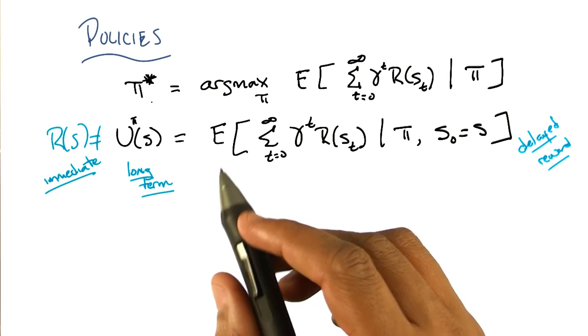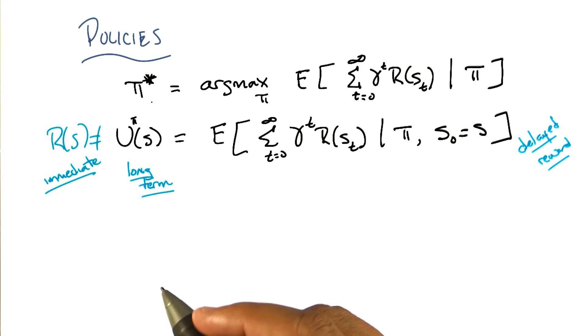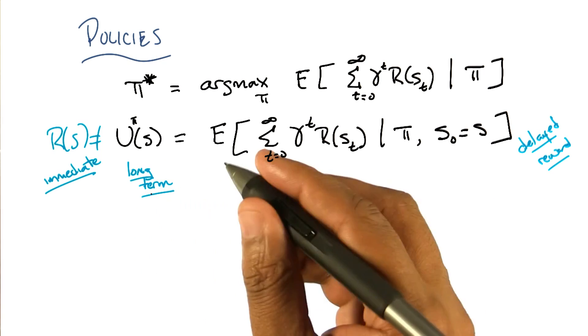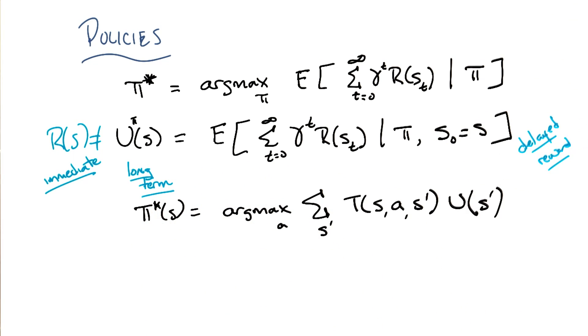So now that we've got utility to find and we've got this π* to find, we can actually do an even better job of writing out π*. And let me do that. All right, so does this equation make sense, Michael?